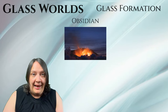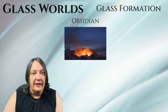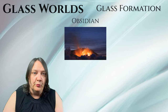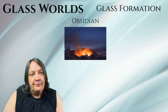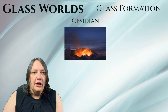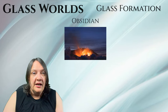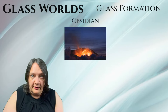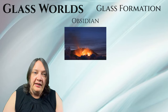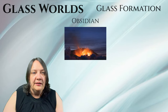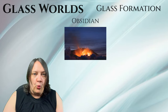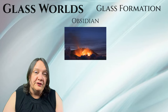Obsidian is normally black in color due to the presence of minute impurities such as iron and magnesium, which absorb light rather than allowing it to pass through. However, it can also display other colors depending on the specific impurities and conditions during formation. Occasionally, obsidian may have a metallic sheen or exhibit patterns, like snowflake obsidian which has white snowflake-like inclusions of cristobalite, a crystalline form of silica.